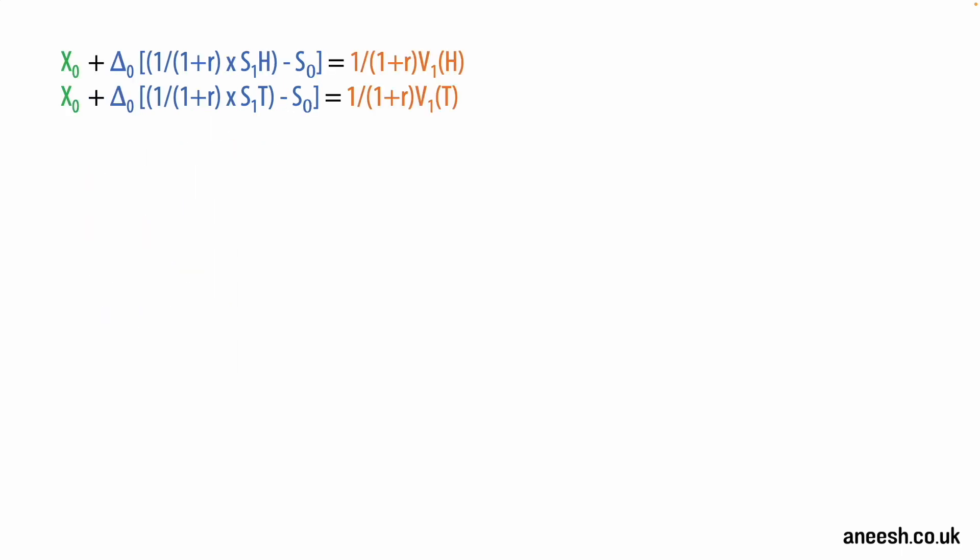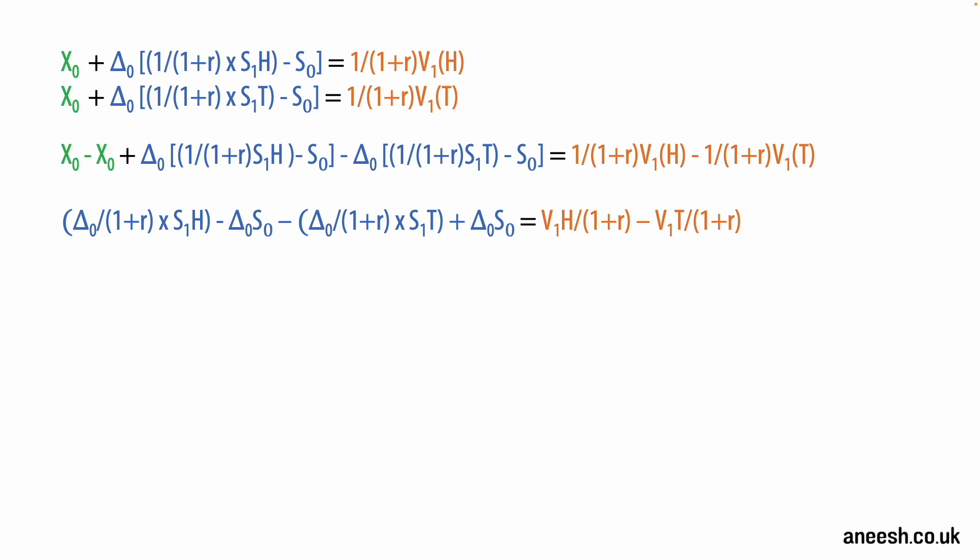Lastly we will solve for delta by subtracting our formula for X1 and V1. I'll then take delta zero out of the brackets in the blue formula and simplify the orange formula by bringing V1(H) and V1(T) to the numerator. The delta zero and S0 cancel out on the left hand side, and we can simplify the V1 formula into one fraction. I can then multiply both sides by (1+r) to remove them from the equation on the left, to leave delta zero multiplied by [S1(H) minus S1(T)] equals [V1(H) minus V1(T)]. Simply moving the [S1(H) minus S1(T)] over will leave our formula as seen in 1.1.9, and this is known as the delta hedging formula.